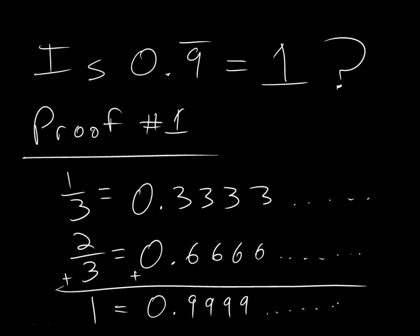1 is equal to 0.9 repeating. Exactly. According to this little proof. Still not buying it? Let me try again.